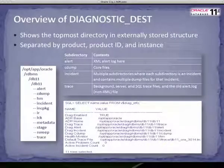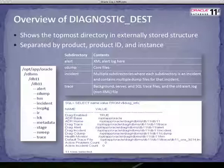Now let's talk a little bit about the diagnostic dest parameter. This parameter, when called, points to the topmost directory in a structure stored external to the database. The directory is separated by product, product ID, and instance name, since there can be multiple directory structures under one diagnostic dest. As you can see here on your left, this is an overview of what the directory is structured like. To the right, we can see some of the key subdirectories and their contents.